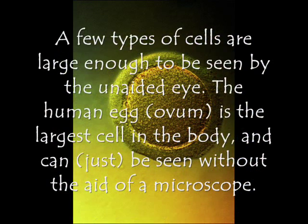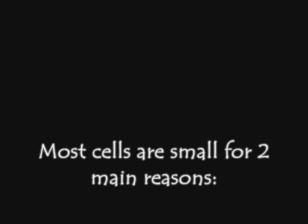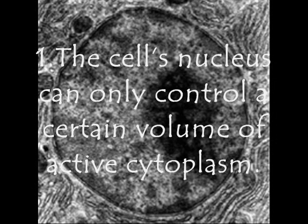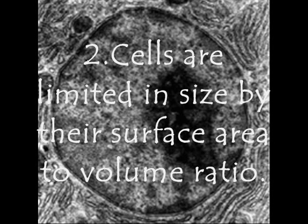A few types of cells are large enough to be seen by the unaided eye. The human egg is the largest cell in the body and can be seen with the aid of a microscope. Most cells are small for two main reasons: first, the cell's nucleus can only control a certain volume of active cytoplasm; and second, cells are limited in size by the surface area to volume ratio.